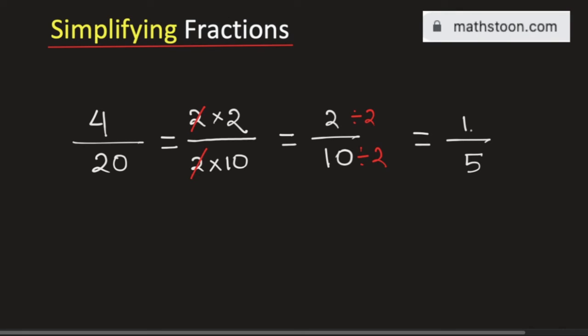Now, there are no numbers which can divide both 1 and 5 other than 1. So, we can say that 1 divided by 5 is the simplified reduced form of the fraction 4 divided by 20. And this is our final answer. Thank you for watching.